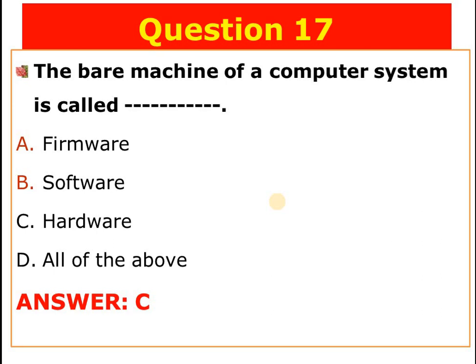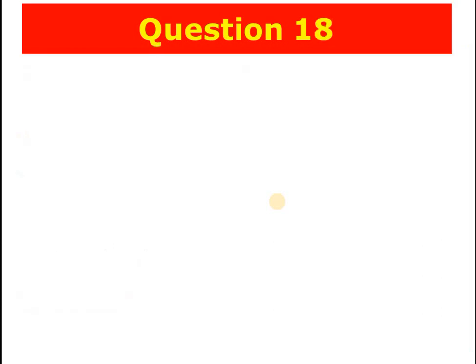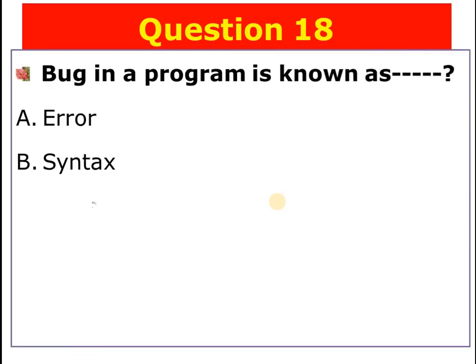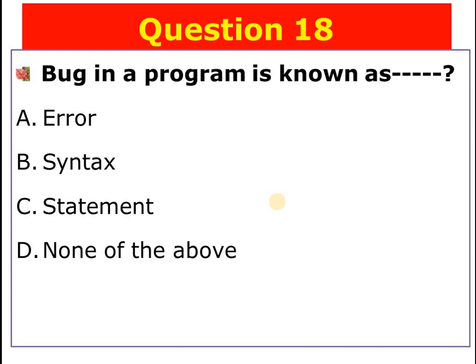Question number eighteen: A bug in a program is also known as blank. A) Error, B) Syntax, C) Statement, D) None of the above. The answer is A — error.